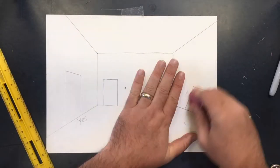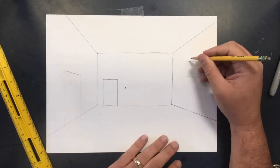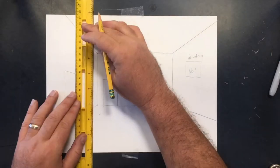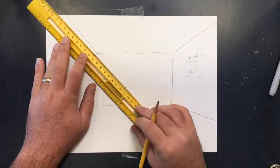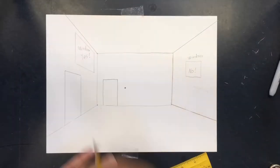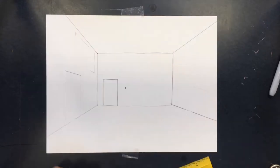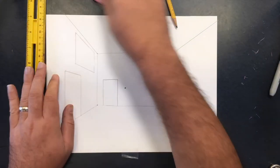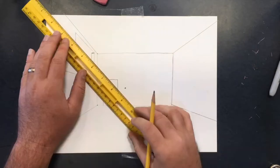Instead of doing that, if you're drawing a door or window, draw one vertical line. Then connect that line, the top and bottom of that line, to the vanishing point. That diagonal line is now the top and the bottom of your door or your window. And then draw a vertical line down to show where that door or window is.